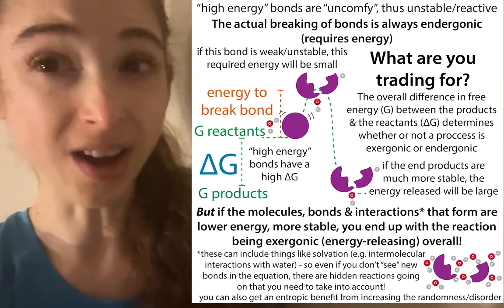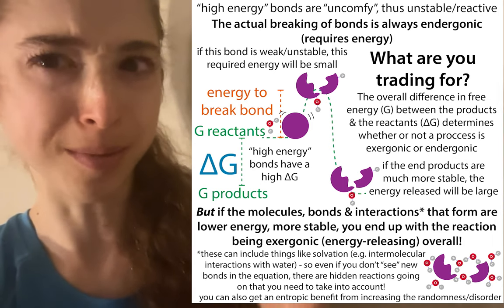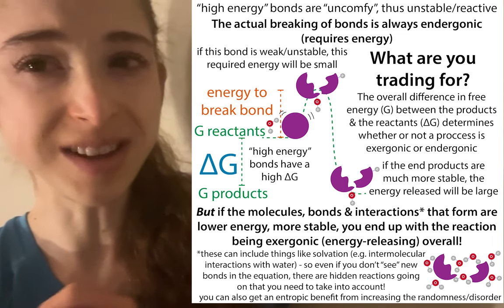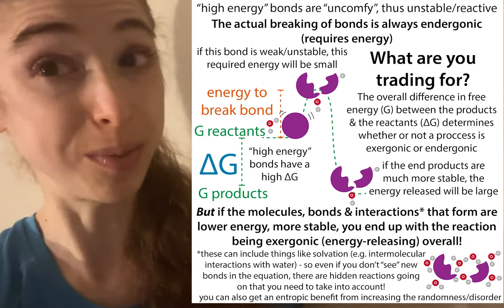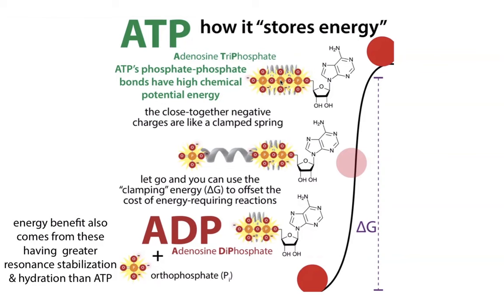We get a lot of energy from burning ATP, but it is not because we break a bond. It's a common misconception that we get energy from ATP by breaking a bond. In fact, breaking of a bond is actually always going to be endergonic — that is, it requires energy — but the key is what we get in return.